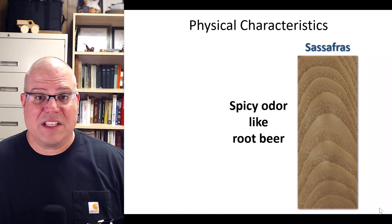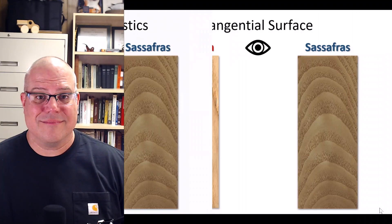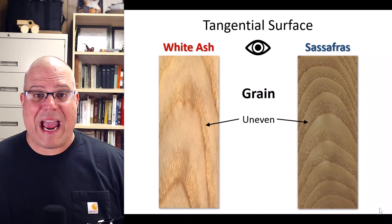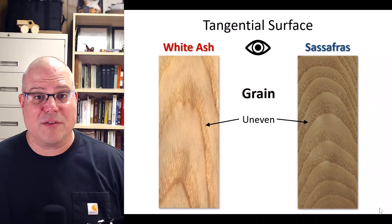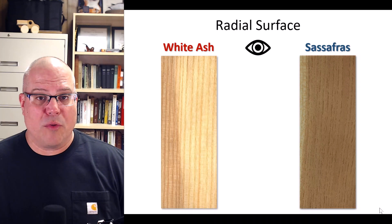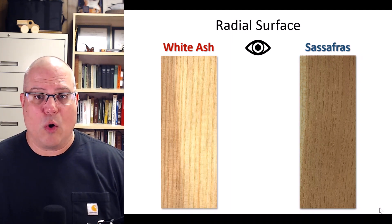While ash lacks a characteristic odor, sassafras has a spicy odor similar to root beer. Next, let's look at some anatomy, starting on the tangential surface. Both ash and sassafras have what we call uneven grain — meaning you can clearly see a visual contrast between the early wood and late wood on the tangential surface. On the radial face, you might notice some ray fleck in both, but the flecks are not big and prominent like we saw in the oaks, so there really isn't much to remember on the radial face.